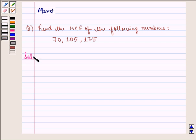Let us start with the solution to this question. By the method of prime factorization we see that prime factors of 70 are 5, 7 and 2. So it is 5 into 7 into 2.